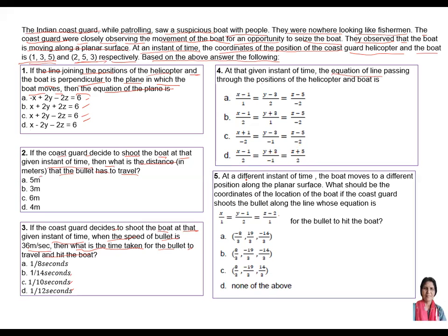Part five: At a different instant of time, the boat moves to a different position along the planar surface. What would be the coordinates of the location of the boat if the Coast Guard shoots the bullet along the line whose equation is x/1 = (y−1)/2 = (z−2)/1? For the bullet to hit the boat, four coordinate options are given and you have to find which one is the answer.